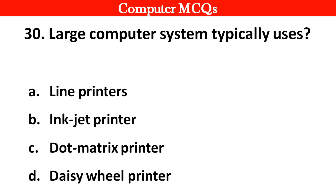Large computer systems typically use: option A line printers, B inkjet printers, C dot matrix printers, D daisy wheel printers. Right answer is option A, line printers.